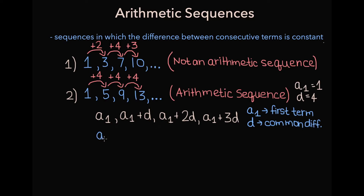To find the nth term, a sub n, in an arithmetic sequence, you can use the formula: a sub n equals a1 plus (n minus 1) times d. To understand where this formula comes from, note that to get the second term we take a sub 1 and add d once; for the third term we add d twice; and so to get the nth term we take a sub 1 and add d exactly n minus 1 times.